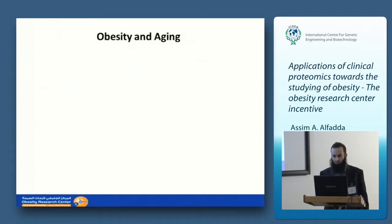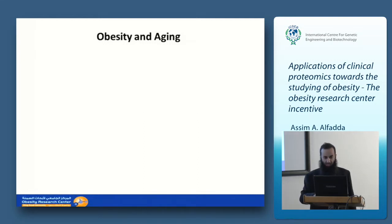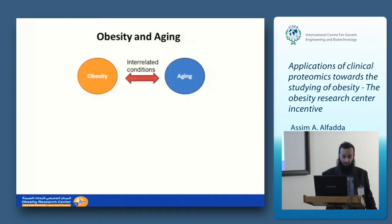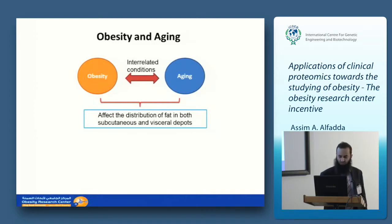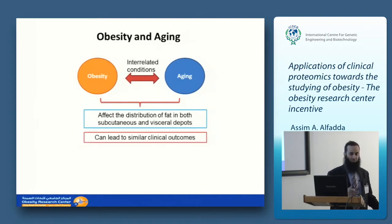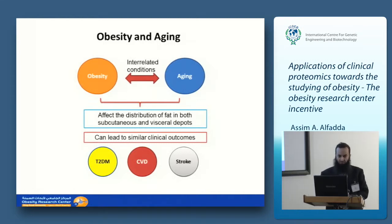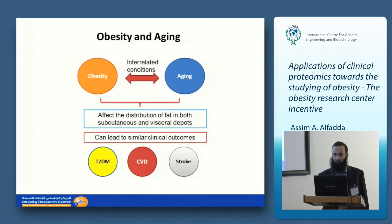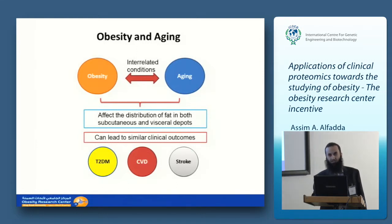The third interesting topic we studied is the relationship between obesity and aging — interrelated conditions that affect fat distribution in both subcutaneous and visceral regions and lead to similar clinical outcomes including type 2 diabetes, cardiovascular disease, and stroke. We asked: what are the differences between these two conditions? Would reducing weight make someone effectively younger? We went back to our biobank to understand the similarities and differences between obesity and aging.